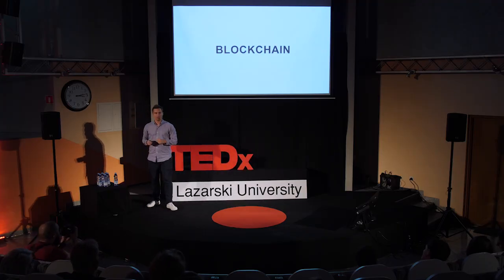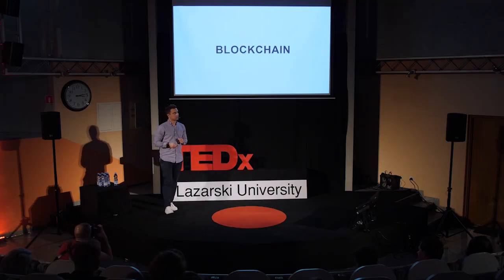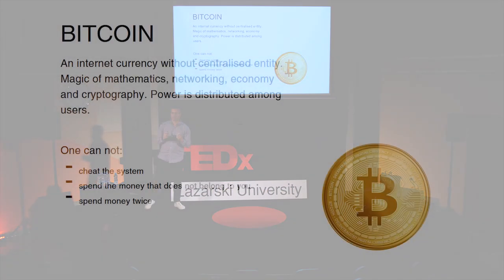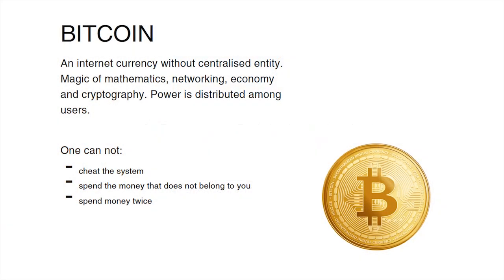Blockchain — it all started with Bitcoin. And you've probably heard about Bitcoin. Bitcoin was the first cryptocurrency — the first internet currency distributed with no central authority. There is no person, no group of people, no institution, no server controlling or running Bitcoin.